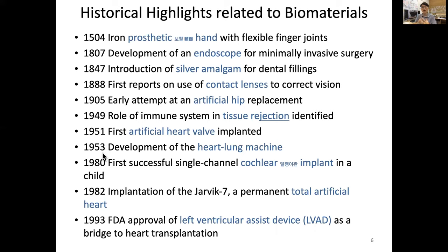During a heart transplant procedure, we need a heart-lung machine to maintain circulation. In 1980, the first successful single-channel cochlear implant was used in a child — an artificial ear replacement. Nowadays we have 8-channel or 24-channel cochlear implants available.